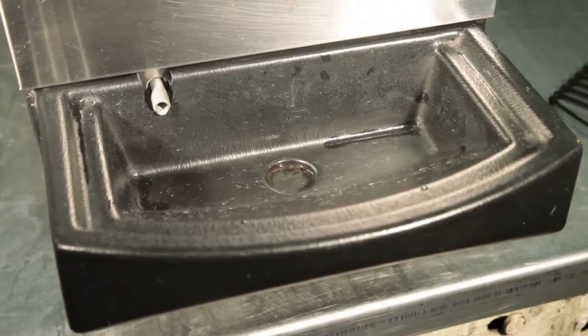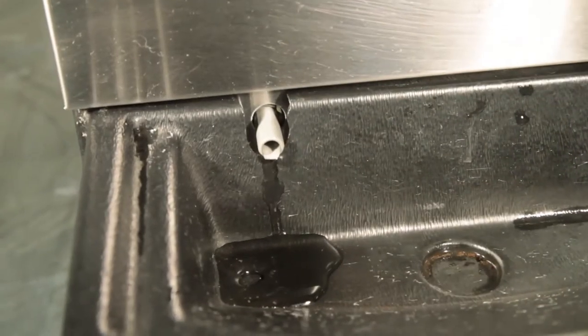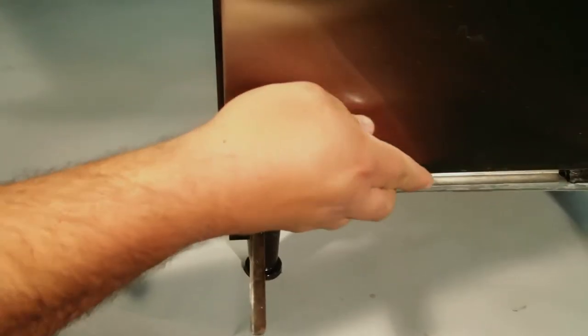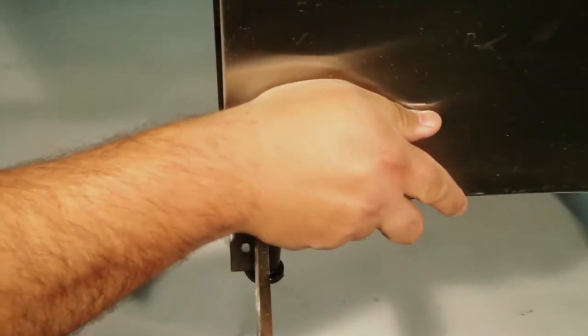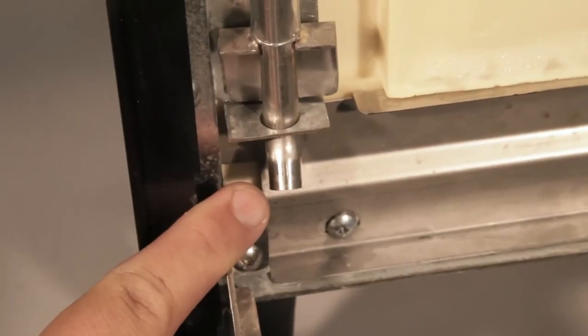Typically this is more prone to happen on the Quantum series dispensers because the condensation line is exposed. With the new Quest series of dispensers, the condensation line is located behind the splash panel, which makes alignment easier.